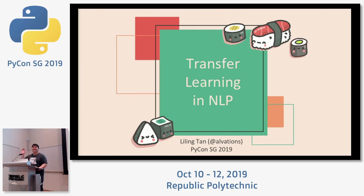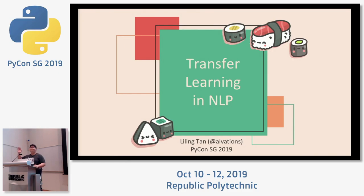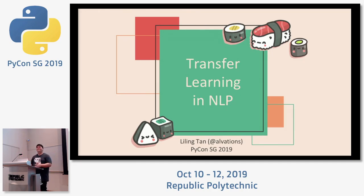Just a show of hands — who works with text and data science here? A few here and there. And who are just web engineers? Mobile engineers also included. Who are just students? What does the rest do? Computer vision — that's still data stuff, that's counted. Who are just pure researchers here?